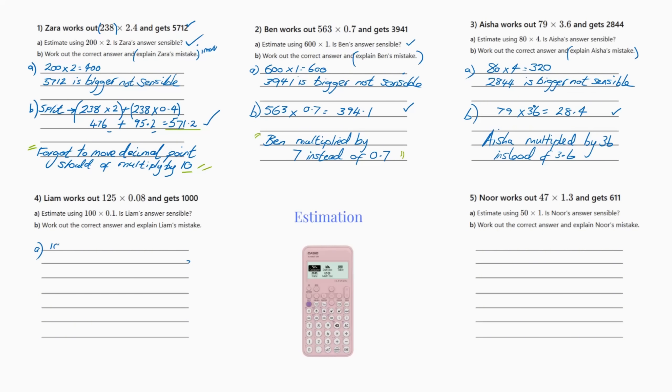Which equals 10. Pop it in your calculator or you can just work that out. I remember his estimated, he's gone down and he's gone up. So you can literally say Liam's answer is not sensible because it is bigger. Now B, work out the correct answer and explain Liam's mistake. So the correct answer is 125 times 0.08 equals 10.